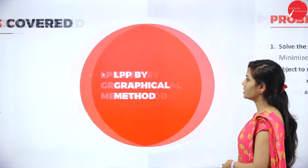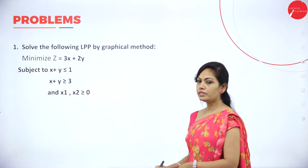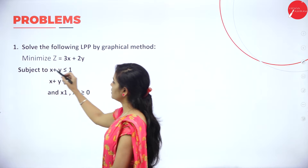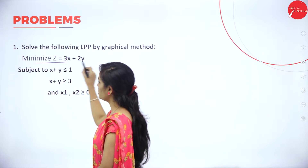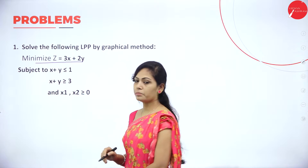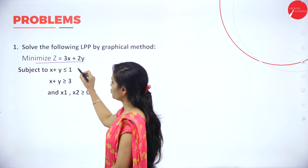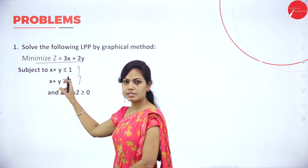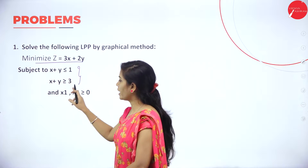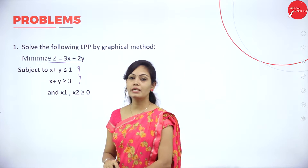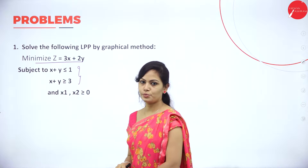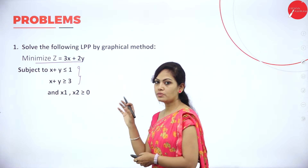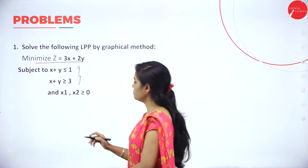The first problem is: solve the following LPP by graphical method. This is a minimization problem again. Here we have two different constraints — one is less than or equal to, and the second one is greater than or equal to. So first you have to convert this into standard form.